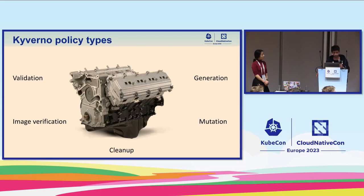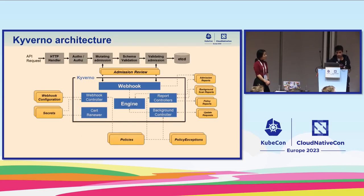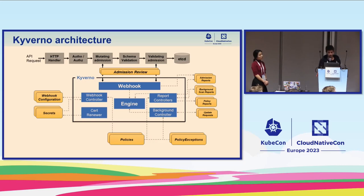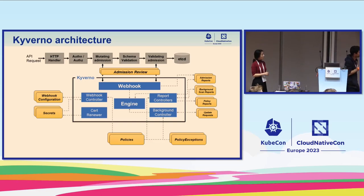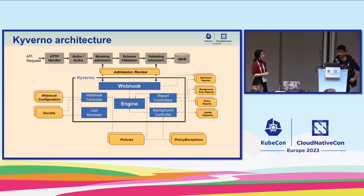Looking at Kyverno's architecture: in the center are the various Kyverno components, and at the top is the API server with the admission chain. The API server offers two extension points in the mutating and validating admission webhook phases. The first job Kyverno has is to configure those webhooks based on the policies installed in the cluster — this is what the webhook controller does, constantly watching policies and configuring the webhooks.